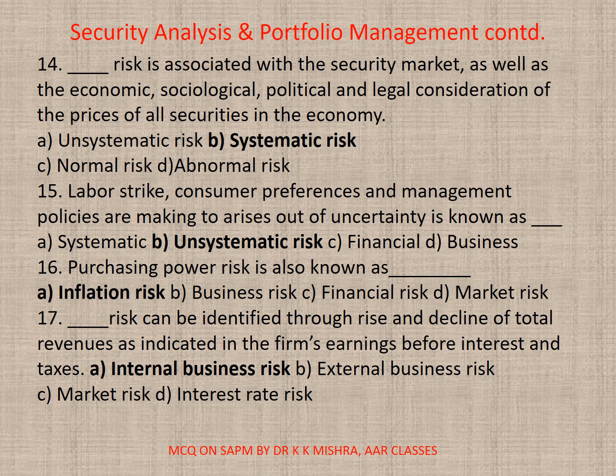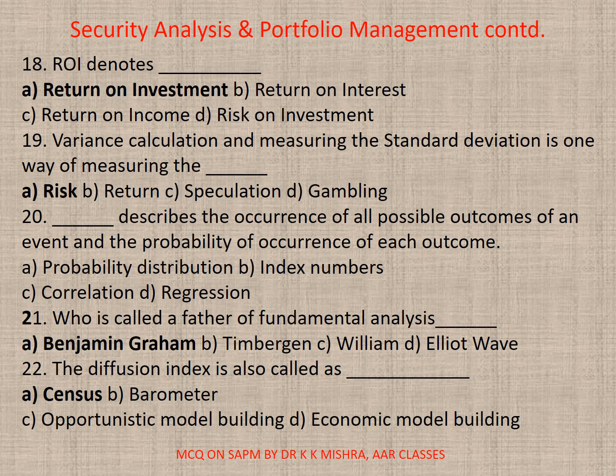Question 16: Purchasing power risk is also known as — correct option A: Inflation risk. Question 17: Dash risk can be identified through rise and decline of total revenues as indicated in the firm's earnings before interest and taxes — correct option A: Internal business risk. Question 18: ROI denotes — correct option A: Return on investment. Question 19: Variance calculation and measuring standard deviation is one way of measuring the — correct option A: Risk.